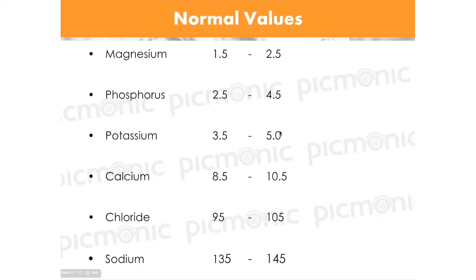Trying to memorize all the membrane potassium ion transporters is not as important as understanding the concept. That's how you'll get the most answers right. The hypokalemia Picmonic shows a less-than-3.5 level with characters representing everything you need to know — including the U-wave on an EKG drum. In the hyperkalemia Picmonic, you see the tall peaked T-wave character on the other side.